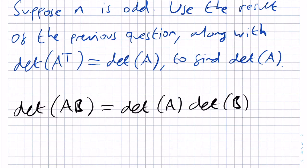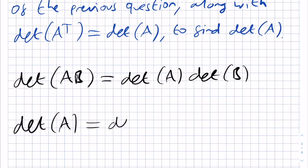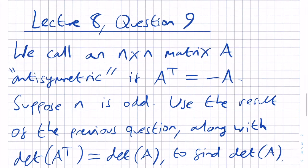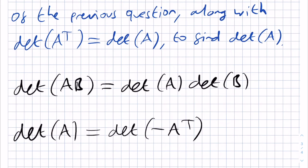We want to find the determinant of A as part of this question. We note that det A equals det of minus A transpose, since A is antisymmetric — i.e. we used this result here.